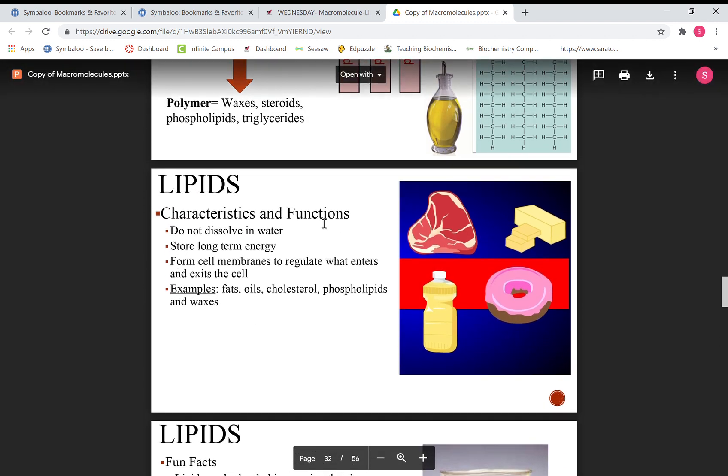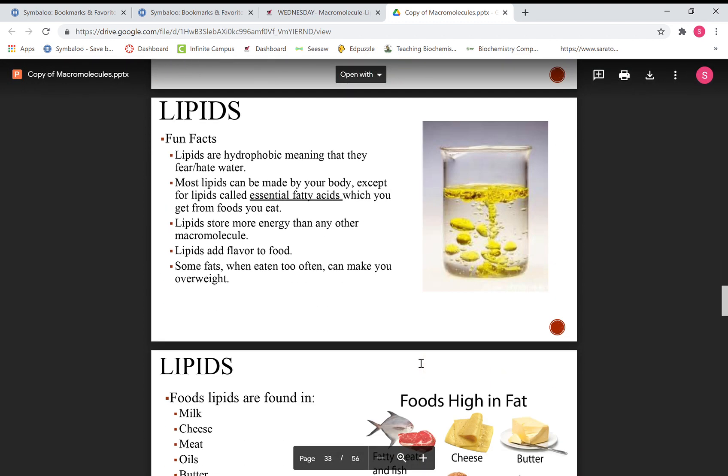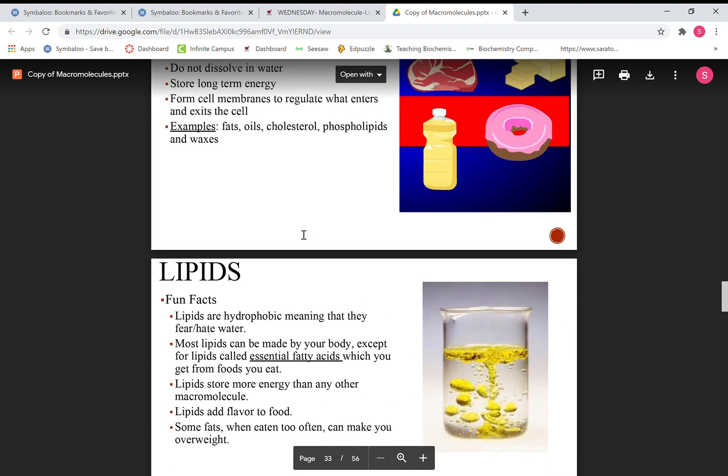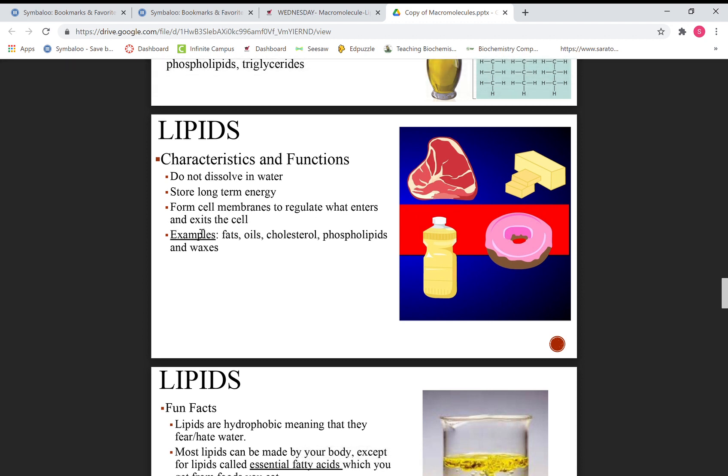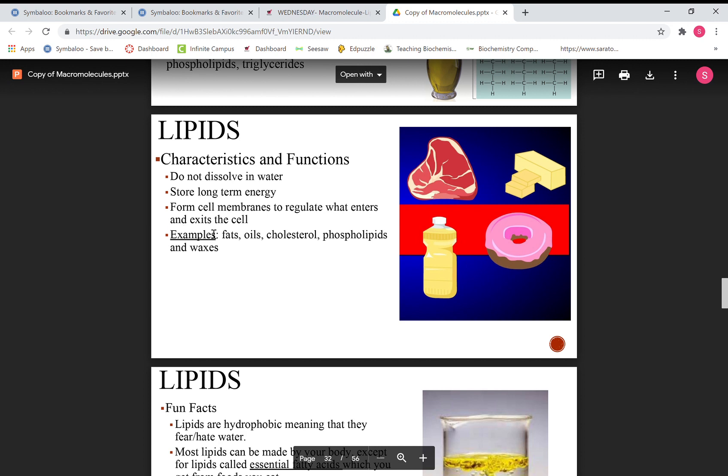The polymer of a lipid is waxes, steroids, phospholipids, and triglycerides. When you look at the characteristics and functions, if you've ever seen oil and water together, they don't mix. They kind of stay separated, kind of like this picture here. The reason why is because the lipids don't like water.